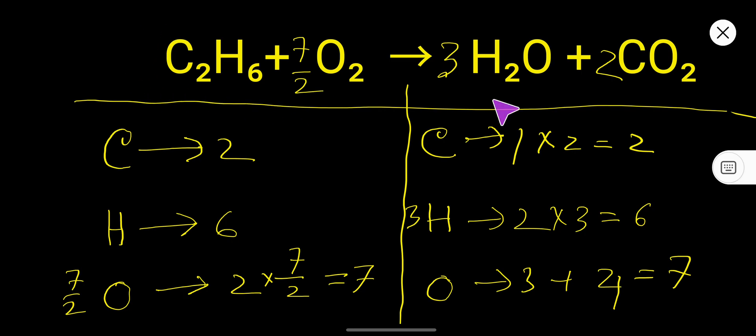So we need to multiply this whole equation by 2. So here you have to place here 2, and if you multiply here 7 over 2, 2 times 7 over 2, that is 7. So you have to place here 7.